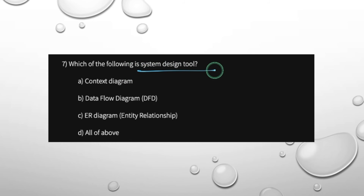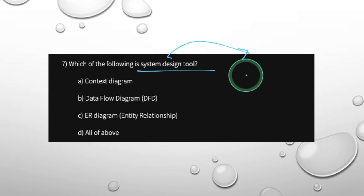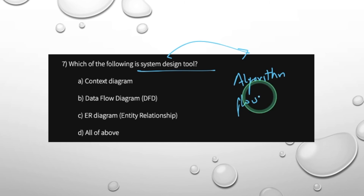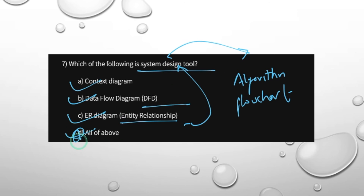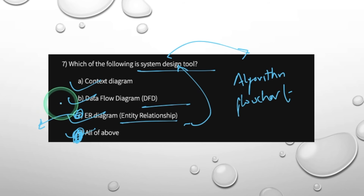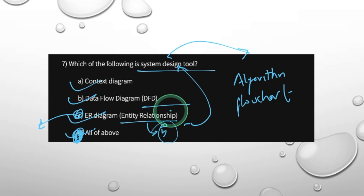Which of the following is a system design tool? The algorithm, context diagram, data flow diagram, and ER diagram are all system design tools — all of the above. Last time the board exam answer was ER diagram. These tools are covered in the system design life cycle chapter.